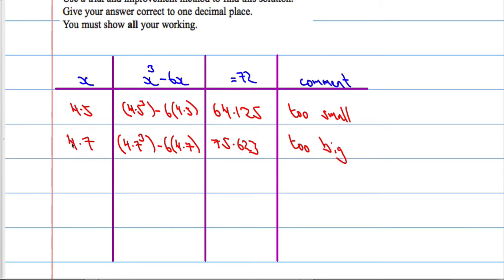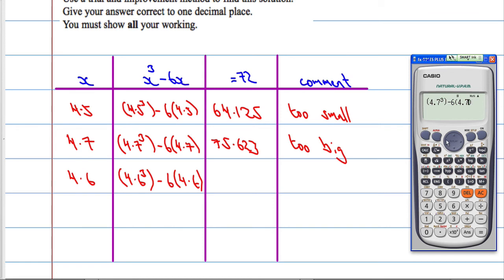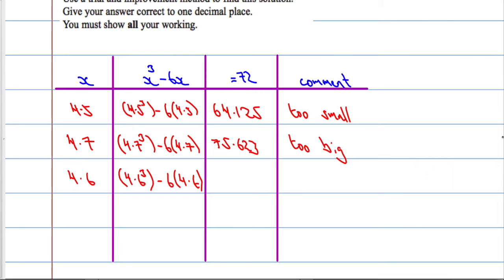That means the answer is between 4.5 and 4.7, so let's see what happens when we try 4.6. We do 4.6 cubed minus 6 times 4.6. Go back on the calculator and change the 7 to a 6. 4.6 cubed minus 6 times 4.6 equals 69.736, and that is too small.